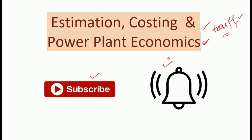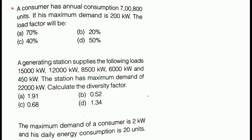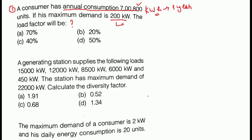Let's start today's lecture. This is question number 1. A consumer has an annual consumption of 7,800,000 units. If his maximum demand is 200 kilowatt, the load factor will be what? Annual consumption is 7,800,000 units, meaning 7,800,000 kilowatt hours, which is the consumption for 1 year. And the maximum demand is 200 kilowatt.